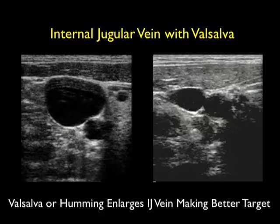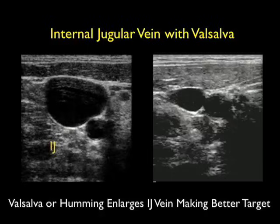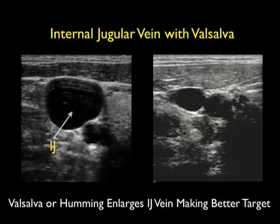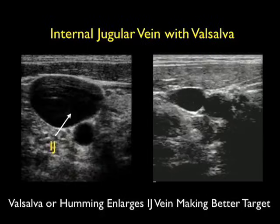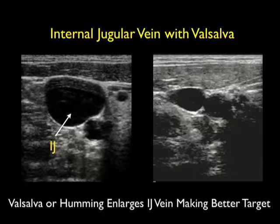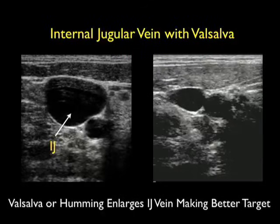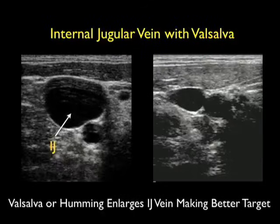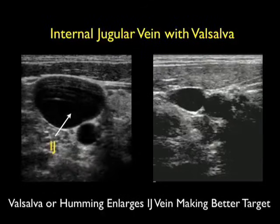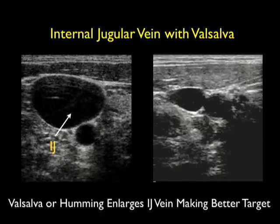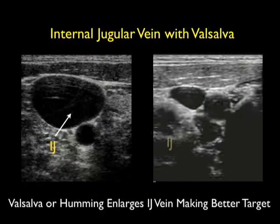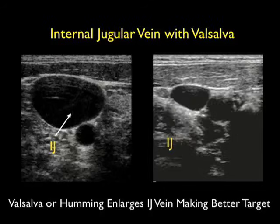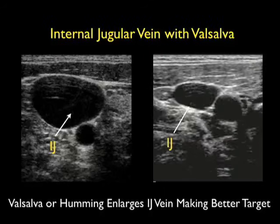One pearl that can be used to further distend the internal jugular vein and make it a better target for a cannulation attempt is to have the patient valsalva or hum. Notice here in the image to the left the patient is bearing down, and notice that the internal jugular vein becomes much bigger as the patient pushes down.